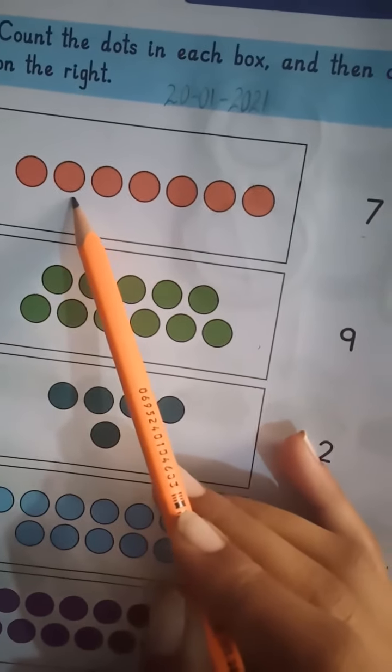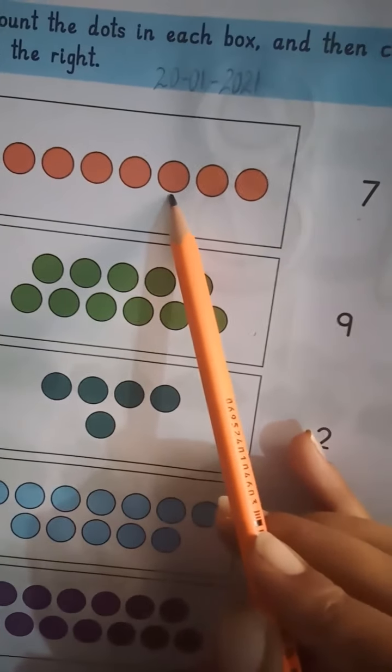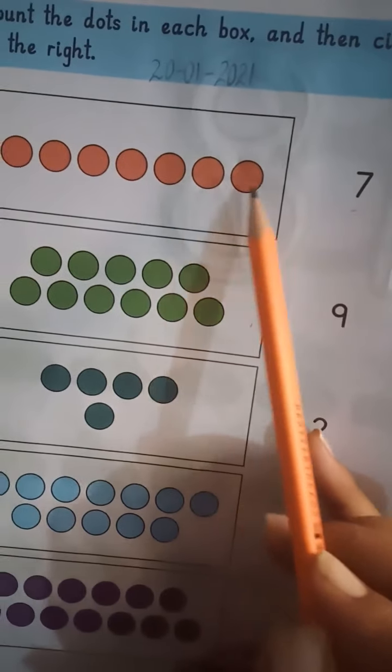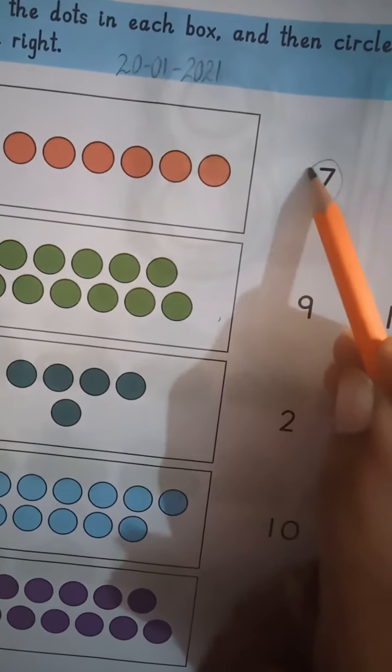One, two, three, four, five, six, seven. So number seven, what are we going to circle?